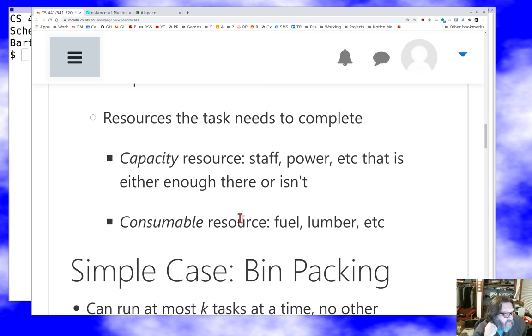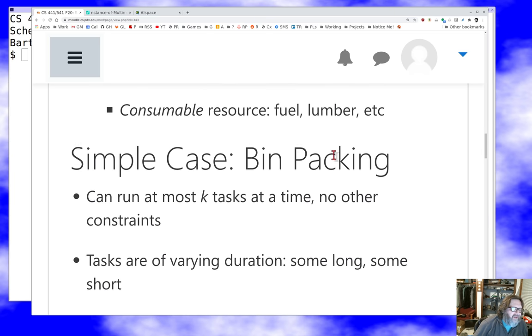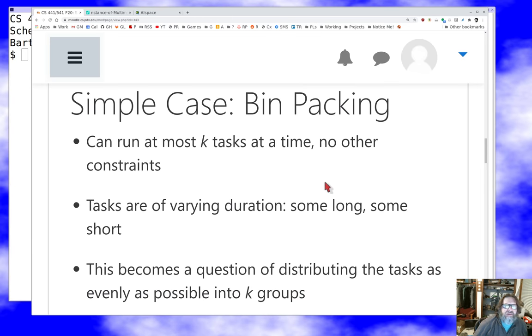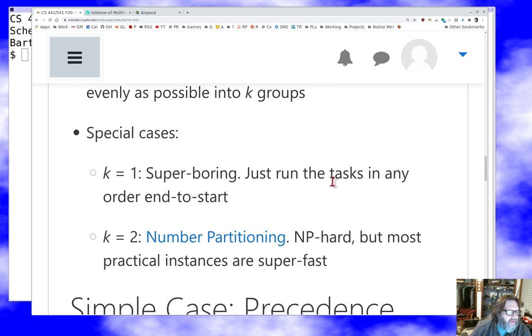Now, if we leave the precedence resources off, we get the simple case of bin packing. We have some limit, let's say, of k-tasks we can run at a time, and we have no other constraints. And so it's just a question of how do I distribute the tasks, some long, some short, into three groups such that they all get executed as parallel as possible. That's a hard problem all by itself. That's an NP-complete problem in general. If there's two or more queues, if there's one task, it's super boring, right?